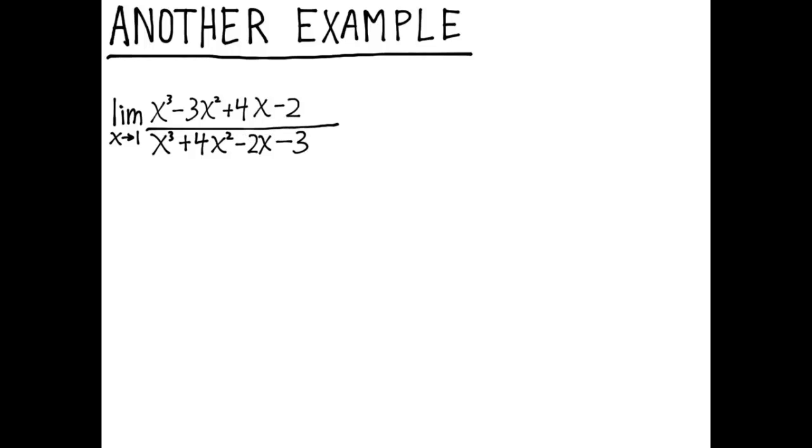We know that since x equals 1 is a 0 of the polynomial, x minus 1 is a factor. All we have to do is to factor out the 0 over 0 problem, we just have to factor out x minus 1.